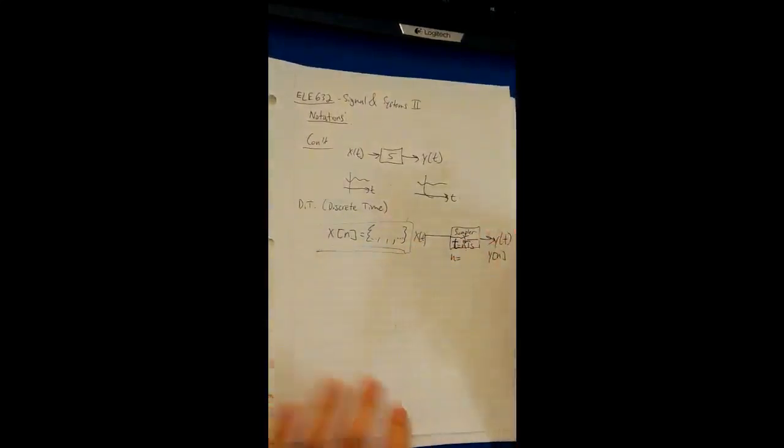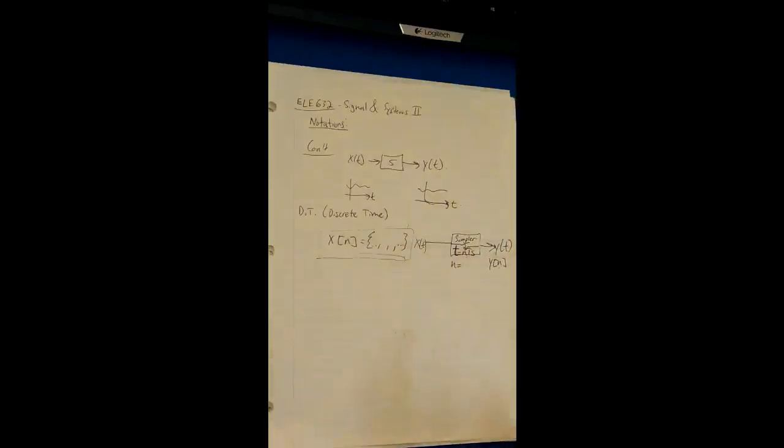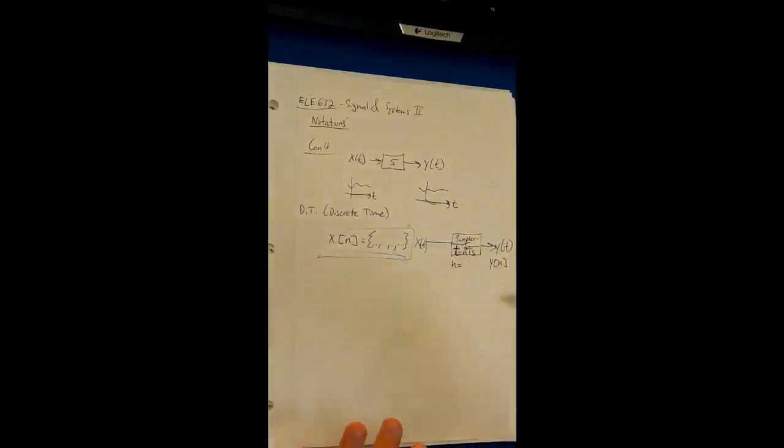You can make a lot of things like this, especially in terms of communications, control theory, all that stuff. The notation is that X of T goes into a sampler, and the time of the sampler is at N T of S. T of S is the period of each sample, and N is at what interval of sample.